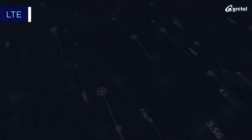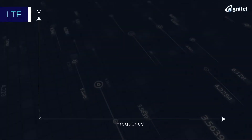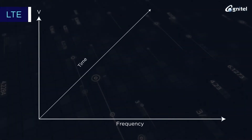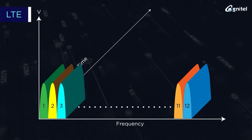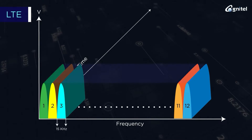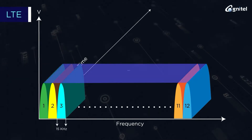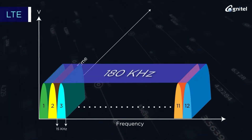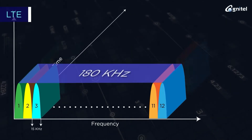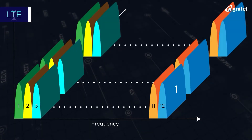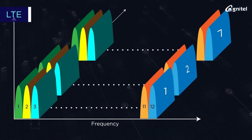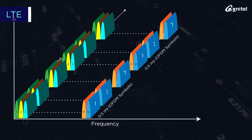In LTE, a primary resource block (PRB) used to consist of 12 subcarriers of 15 kilohertz each, totalling 180 kilohertz bandwidth in the frequency domain. In the time domain, these subcarriers had one slot of 0.5 millisecond.